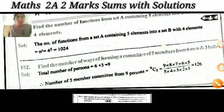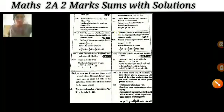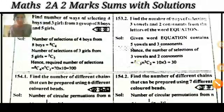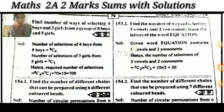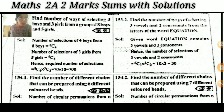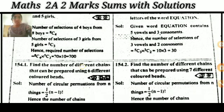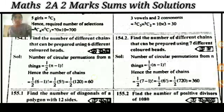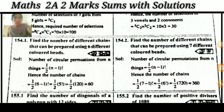More questions from Permutations and Combinations: find the number of ways of selecting four boys and three girls — a very easy question. Find the number of ways of selecting three vowels and two consonants — also very easy.